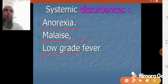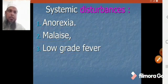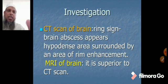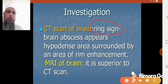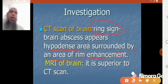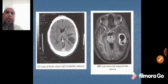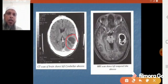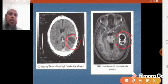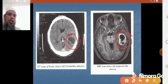For investigation of brain abscess, we usually perform a CT scan of the brain or MRI of the brain. On CT scan you can see the ring sign — a hypodense area surrounded by a rim of enhancement. MRI is superior to CT scan; it shows a hyper-intense area of the rim with a hypo-intense area within it. By these two investigations we can diagnose brain abscess.